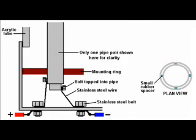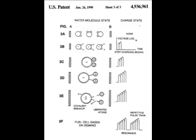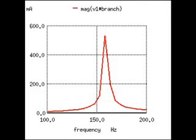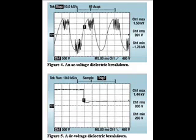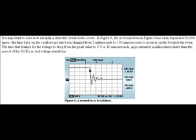Stan Meyer's idea was to create forces between the plates that are bigger than those holding the water molecule together, in order to break it apart. At resonance, the voltage in the capacitor grows significantly. It is stated that 2000 volts across a one-millimeter gap of distilled water is needed to make it conduct and disintegrate into its elementary components.